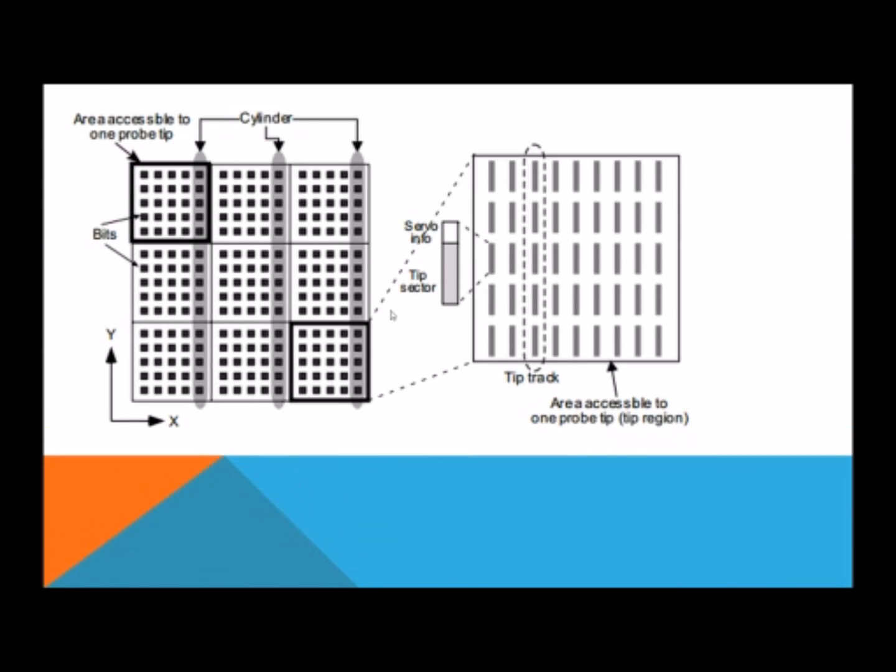Here we have a visualization of what a MEMS architecture looks like. Right here, this bold box would be your tip region with the whole thing being your media sled, obviously. Each tip array is only allowed to read and write inside of the tip region, which only has, in this example, 5 bits squared. The tip sector is your coordinate system, so X, Y, and tip. So this would be tip 1 right here in the bottom, and this has its own X and Y coordinate. This is tip 2, tip 3. That's how it references what's inside of the MEMS architecture.